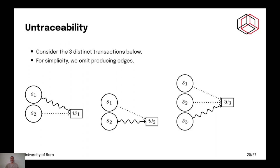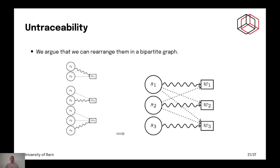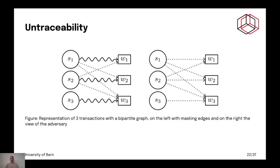Now, please consider these three transactions where you have S1 consumed in the first, S2 consumed in the second, and S3 consumed in the third. Now, we can rearrange this in a bipartite graph. And that makes it handy because we can use previous work. And just as a reminder, on the right you have the view of the adversary and on the left you have the true state consumption.